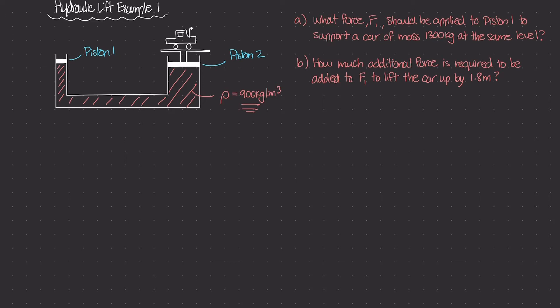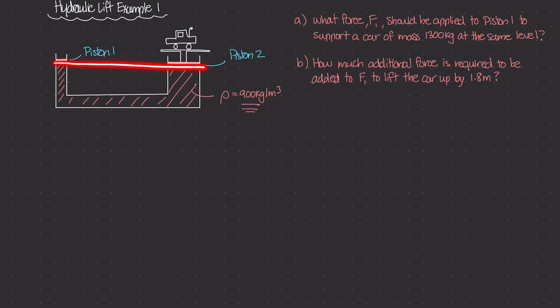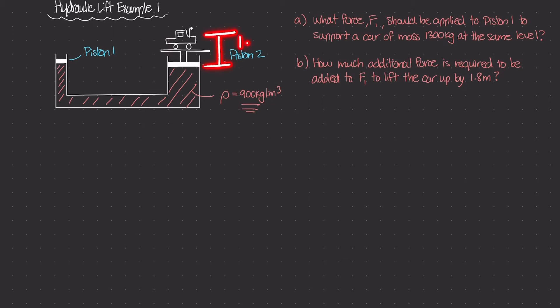In this example, we want to find answers to two questions. The first one is: what force F1 should be applied to piston one to support a car of mass 1300 kilograms at the same level? The second question is how much additional force is required to be added to F1 applied to piston one to be able to lift this car up by a distance of 1.8 meters.